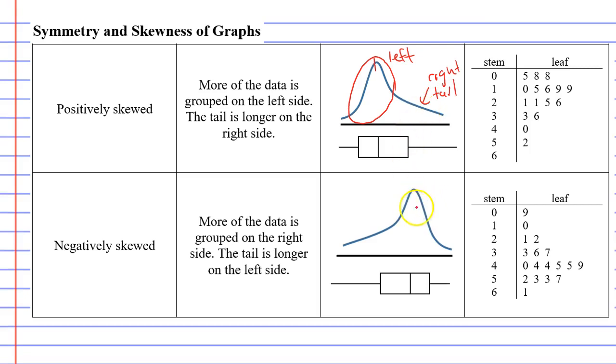For negatively skewed graphs, most of the data is grouped on the right side, and then the tail is on the left. That is how you tell whether it's positively or negatively skewed.